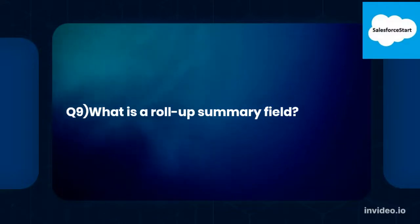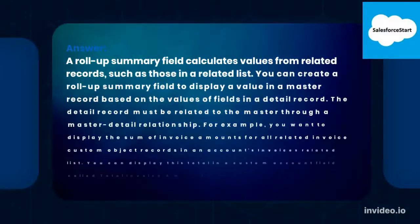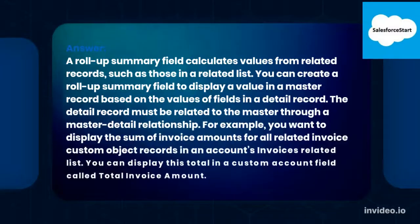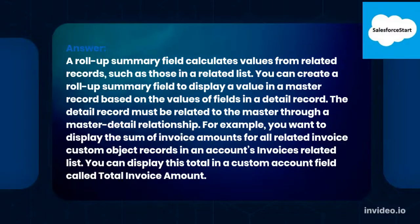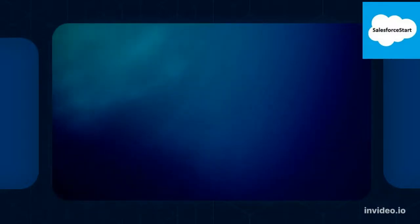Q9: What is a roll-up summary field? A roll-up summary field calculates values from related records, such as those in a related list. You can create a roll-up summary field to display a value in a master record based on the values of fields in a detail record. The detail record must be related to the master through a master-detail relationship. For example, you want to display the sum of invoice amounts for all related invoice custom object records in an account's invoices related list — you can display this total in a custom account field called Total Invoice Amount.